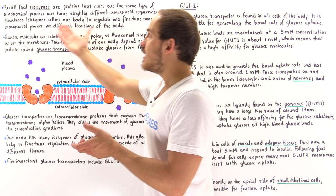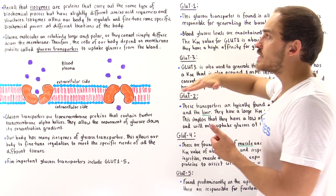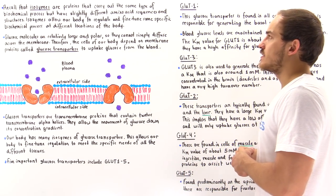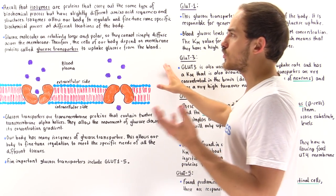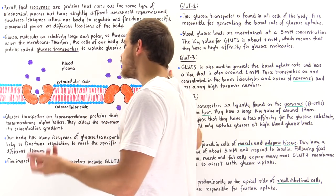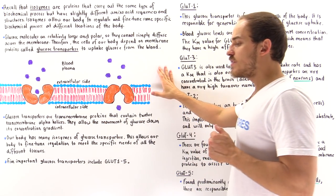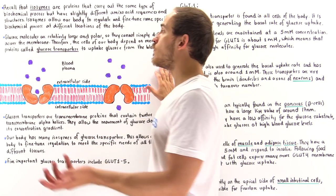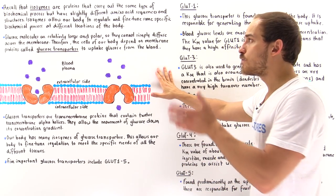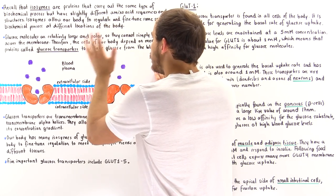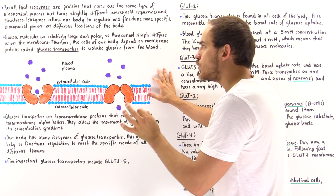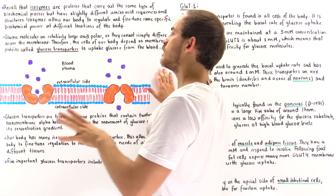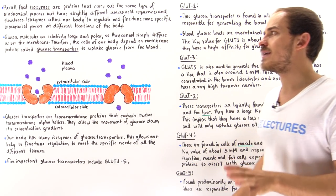Isozymes are proteins that carry out the same type of biochemical process but have slightly different amino acid sequences and slightly different structures, and so because of that they display slightly different properties — for instance, they might have different Michaelis constant values, they might have different turnover numbers, and so forth. These isozymes allow our body to fine-tune these regulatory pathways to meet the needs and demands of all the different types of cells that exist inside our body.